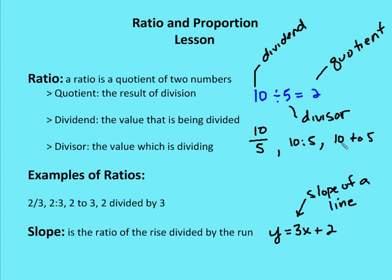A lot of times we talk about the slope of lines, and slope is also a ratio. It's the ratio of the rise, or vertical change, over the run, or horizontal change. In y = mx + b form, m is the slope. For example, in y = 3x + 2 the slope is 3, which represents the ratio 3 over 1, meaning for every three units of positive vertical change, there is one unit of positive horizontal change.